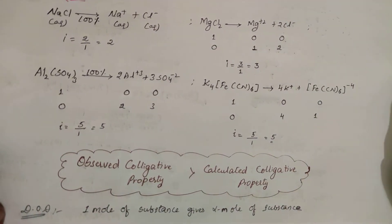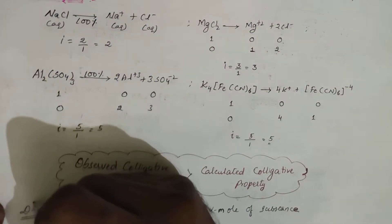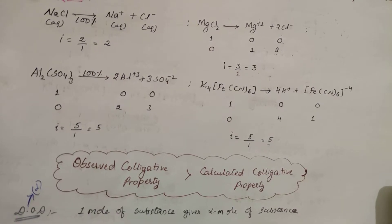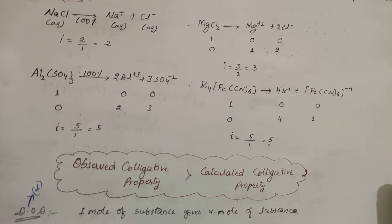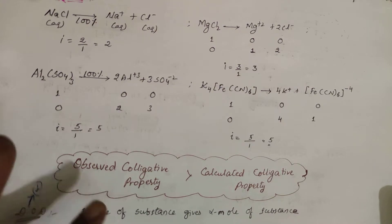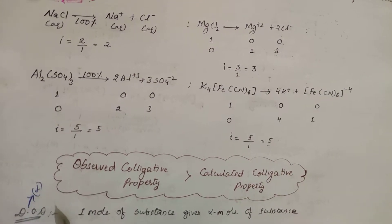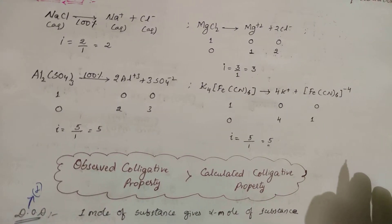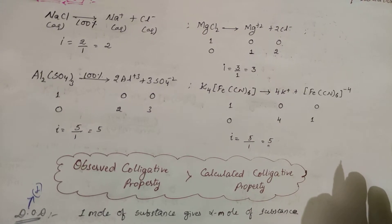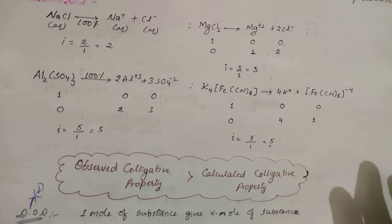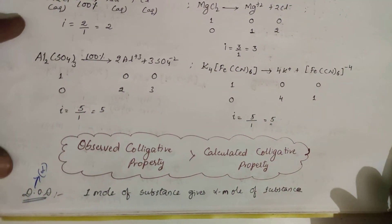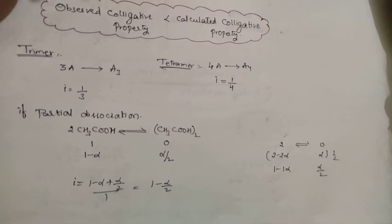Now, the degree of dissociation (α) — learned in chemical equilibrium — indicates how many moles of substance have dissociated from one mole taken. So α moles have dissociated from one mole of substance.